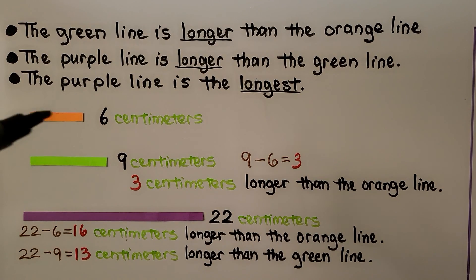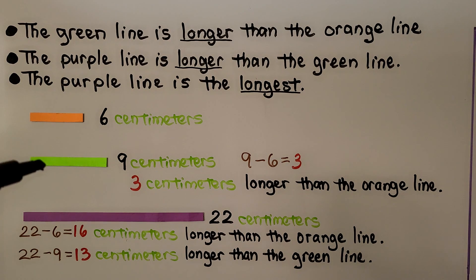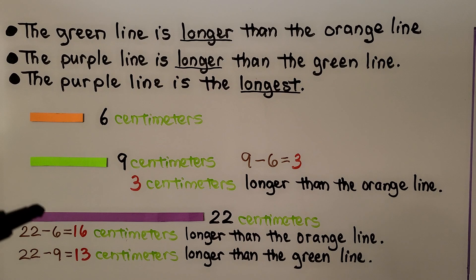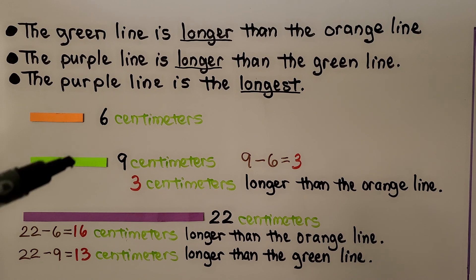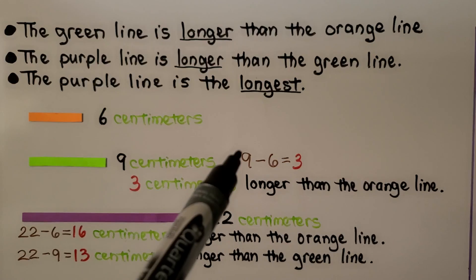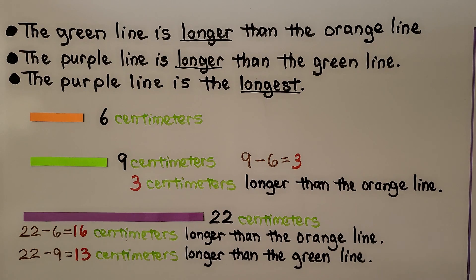Here we have an orange line measured at 6 centimeters, a green line measured at 9 centimeters, and a purple line measured at 22 centimeters. The green line is longer than the orange line, the purple line is longer than the green line — and also longer than the orange one — so the purple line is the longest. To find the difference between the green and orange lines, we subtract: 9 centimeters minus 6 centimeters is 3 centimeters. The green line is 3 centimeters longer than the orange line.